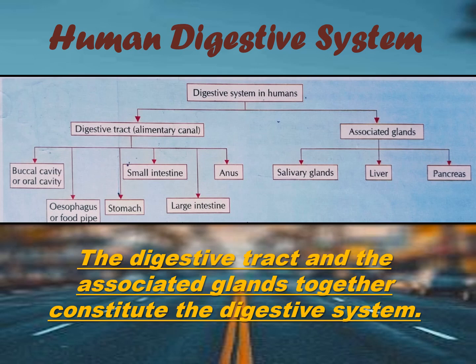There are several organs that are part of the digestive system. Every organ has a role in breaking down food and managing the waste material. The human digestive system has two main parts.